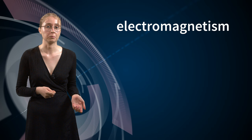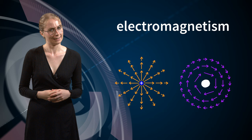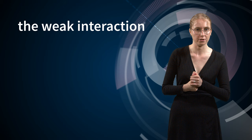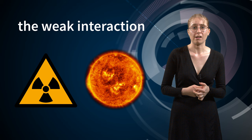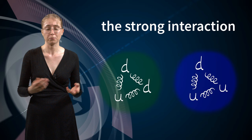You've probably heard of electromagnetism, which is responsible for electricity and magnetism, but it also allows light to travel through the universe as electromagnetic radiation. The weak interaction is responsible for particle transformations, for example in certain radioactive atoms — it is harder to see in our everyday life, but without it, the sun would not shine. The strong interaction allows quarks to attract one another and bind together to form composite particles like protons and neutrons, which each consist of three quarks.